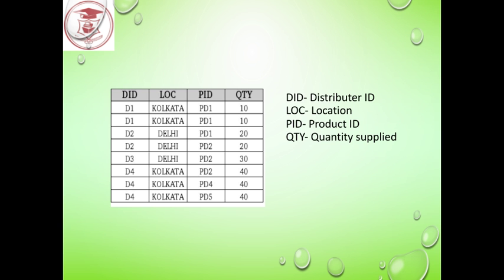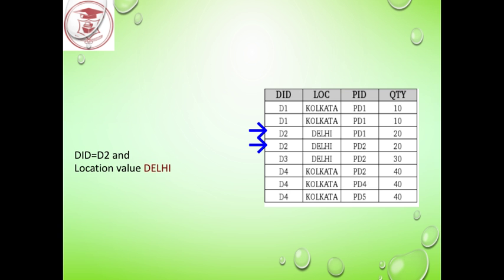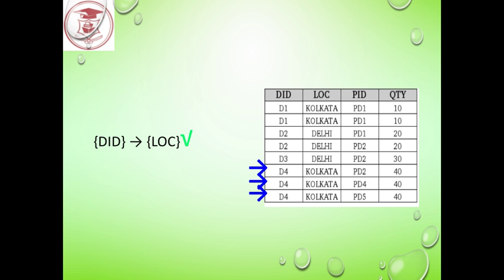Let's take another example. In this relation, d_id is the distributor id, loc is the location, p_id is the product id, and quantity is supplied by the distributor. We find out whether d_id functionally determines loc or not. For the first two tuples, d_id value d1 has the same location value Kolkata. For d2 we get Delhi, d3 location Delhi, and d4 we have Kolkata. So d_id functionally determining location is satisfied from this relation.